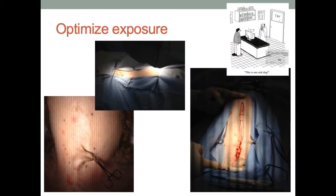For male dogs, I use towel clamps to clip the prepuce over to the side — that pulls the preputial musculature over and creates a nice window. You still have a couple of preputial vessels to deal with, but far fewer than leaving the prepuce relaxed on midline. Come lateral to the prepuce through the skin and subcutaneous tissue, but your linear incision stays on midline all the way down.